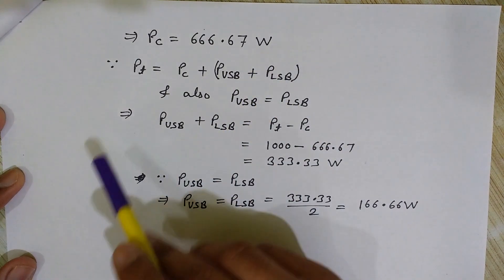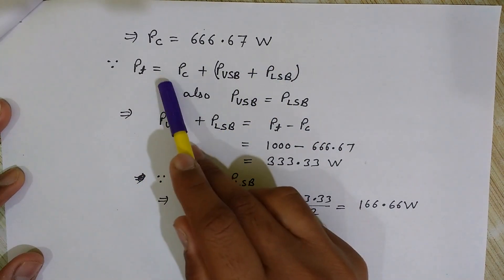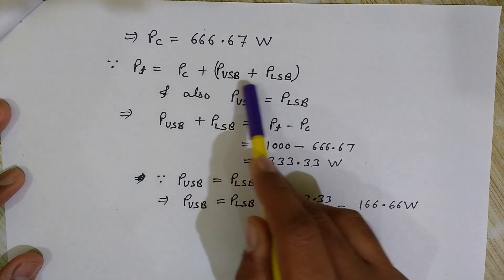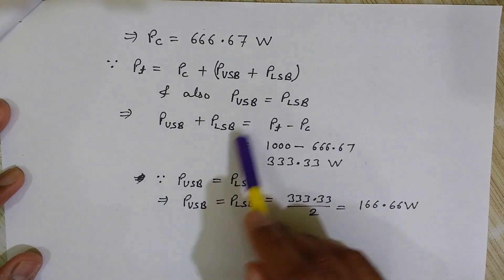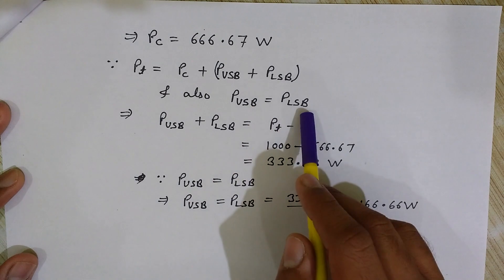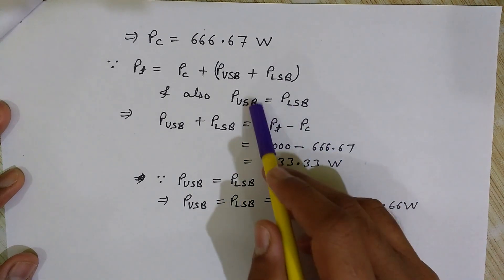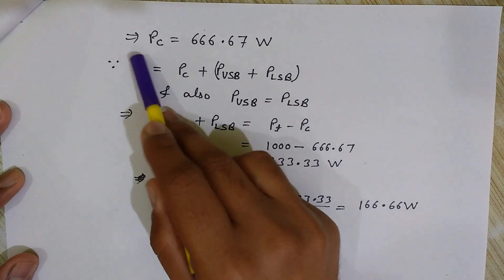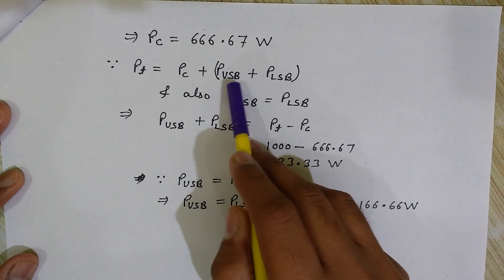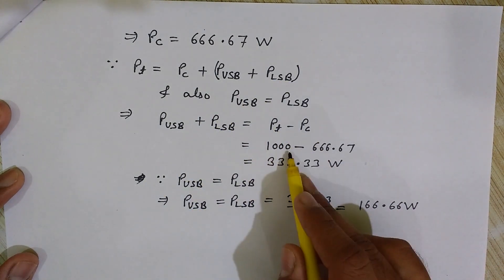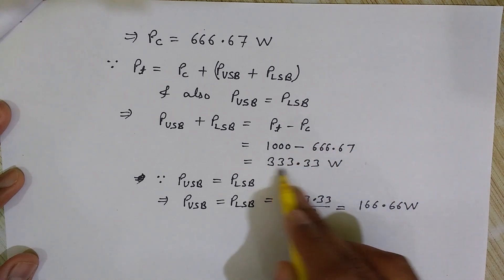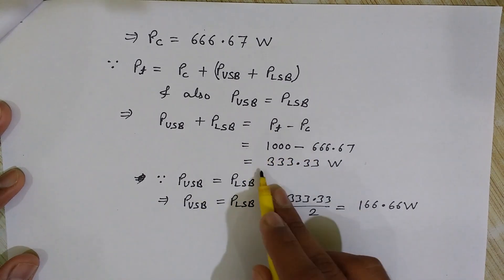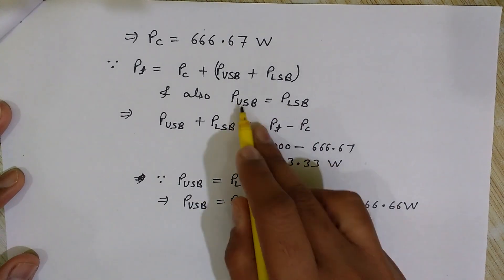The total power is the sum of all three components: carrier power plus upper sideband power plus lower sideband power. We also know that the upper sideband and lower sideband have equal power. So the combined sideband power is 1000 minus 666.67, which gives 333.33 watts for both sidebands together.